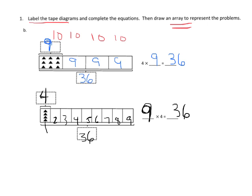I forgot to draw the arrays, so let's do that now in blue. On this first example we have four rows of nine, because the first number traditionally represents rows and the second represents columns — so four rows of nine.